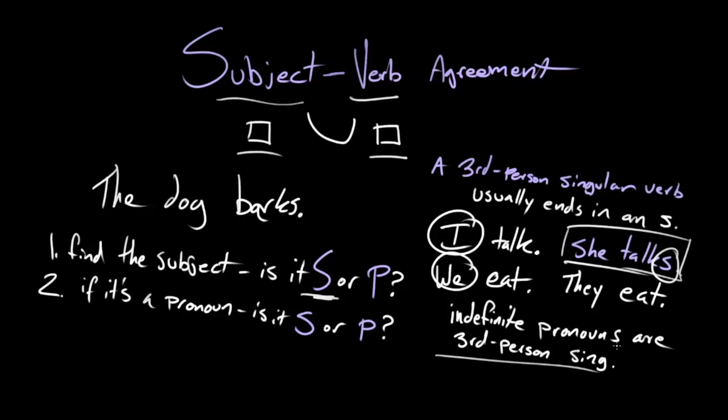And although do is an irregular verb, we still hold to the idea that a third person singular verb ends in an S. So it's a Z sound written as an S, so we would say does.